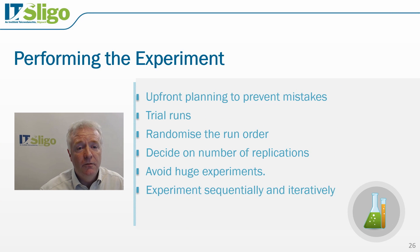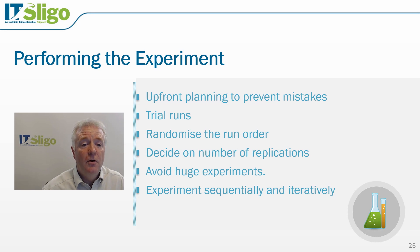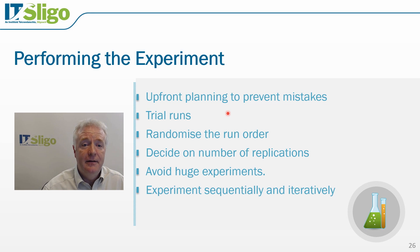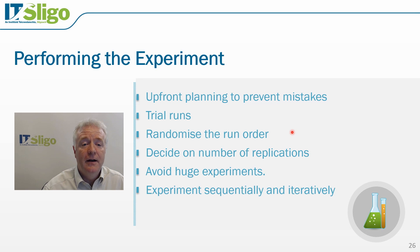We will now need to perform the experiment. It's important that we plan the experiment beforehand to avoid mistakes while conducting it. We need to perform a number of trial runs to make sure that everyone is familiar with what factors need to change, how the data has been recorded, and that the levels are appropriately set. We also need to randomize the order in which we conduct the experiments, which will allow us to evaluate whether the experiment was conducted correctly or not.